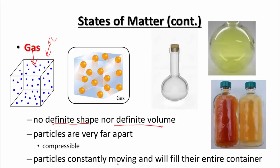Gas particles are constantly moving and fill their entire container. If there's a piston and you pull it back, the gas will expand and fill the container as well. Here's some examples of gases moving around in a box. Here we have a colorless gas — it could be oxygen or hydrogen. Here we have chlorine, which is actually a yellow gas; it's diatomic, Cl2. And then here we have nitrogen monoxide and nitrogen dioxide, which are a brownish or gold-colored gas.